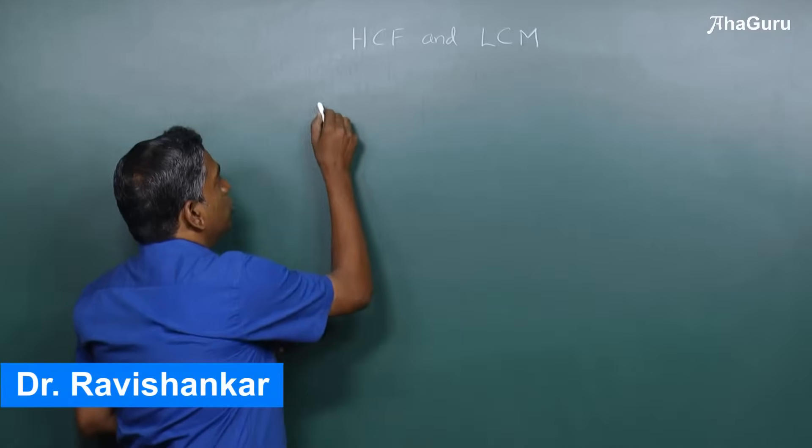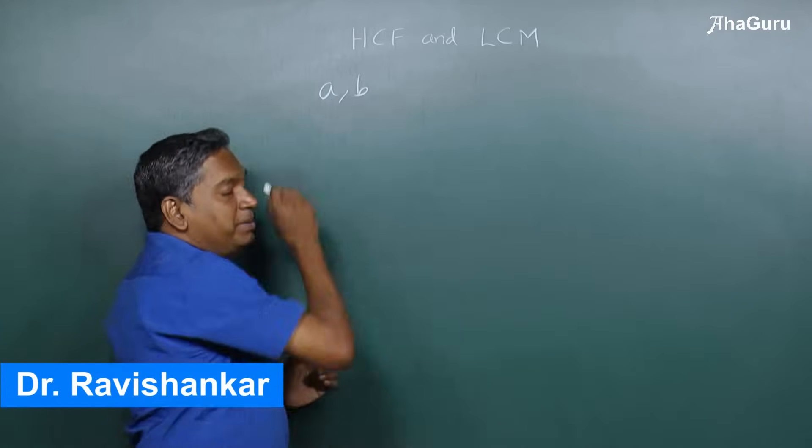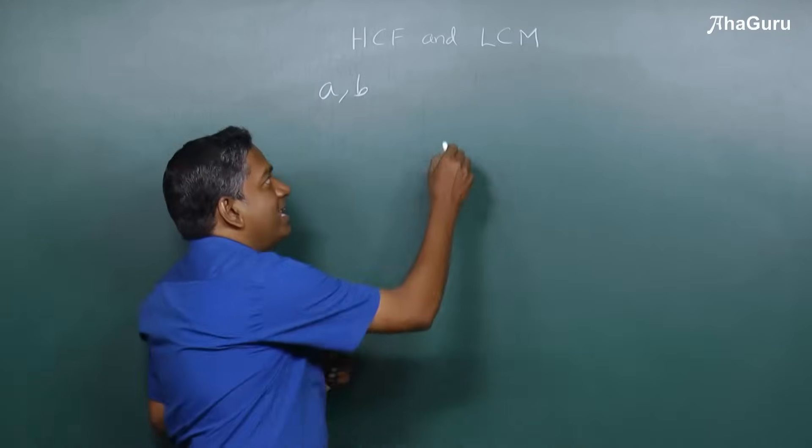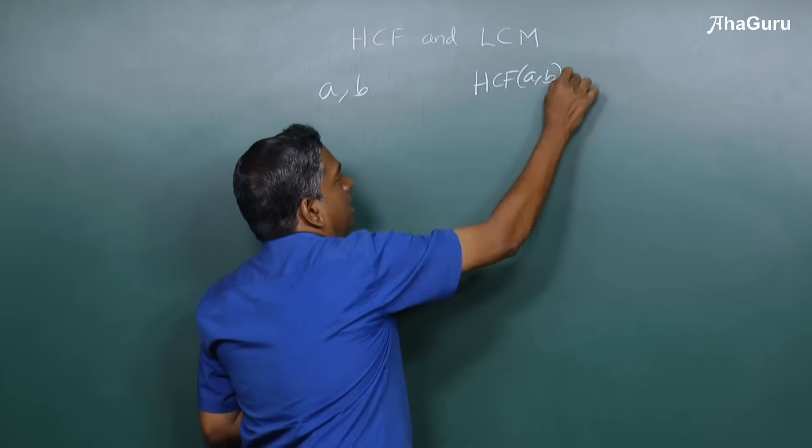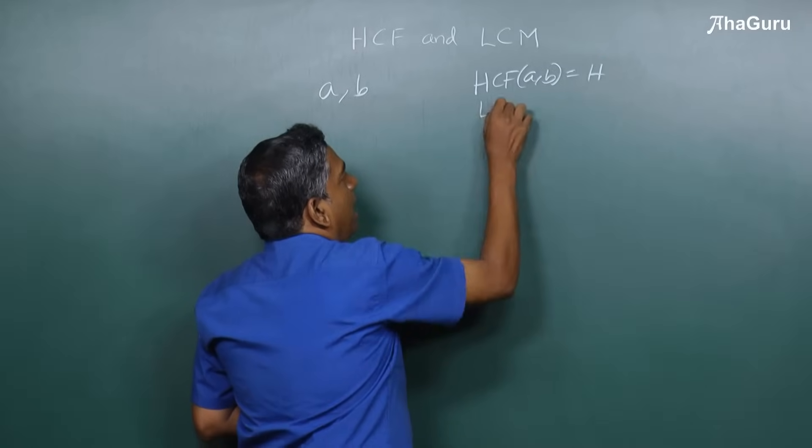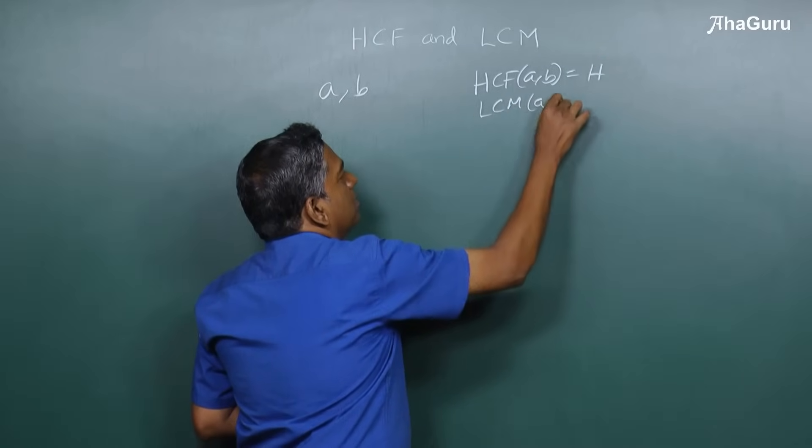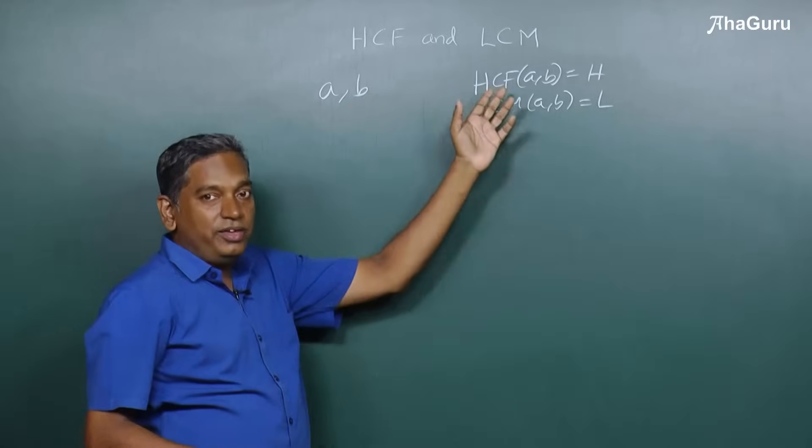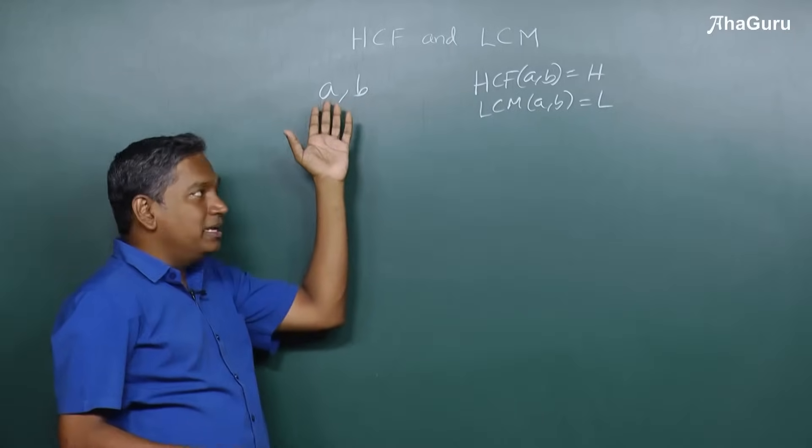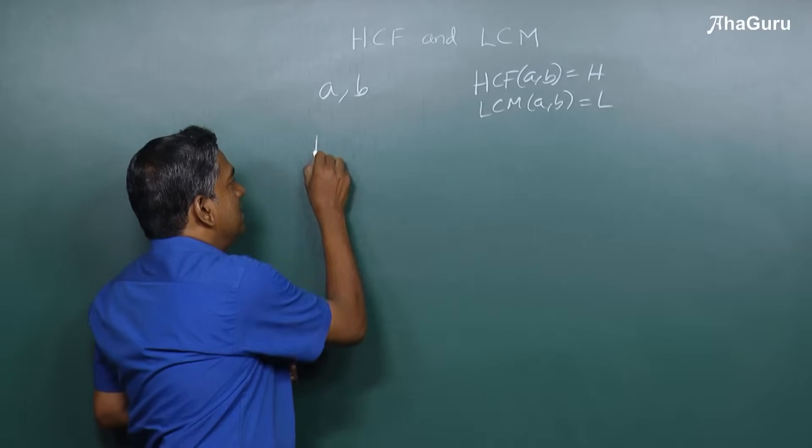Let's say we are given two natural numbers A and B, and we are told that their HCF is H and their LCM is L. Now these are just symbols or variables. We can of course take some numbers as examples.